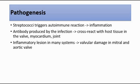Valve damage is more common in the mitral and aortic valves, and less common in the pulmonary and tricuspid valves. So the complication is scarring and fibrosis of the valve tissue, causing mitral and aortic stenosis.